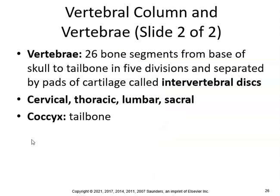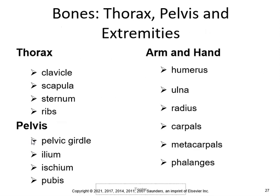There are 26 vertebral segments from the base of the skull to the tailbone, in five divisions, separated by pads of cartilage called intervertebral discs. When people say they herniated L4-L5, they're referring to those discs between the bones. The regions are cervical, thoracic, lumbar, sacral, and coccyx (tailbone).